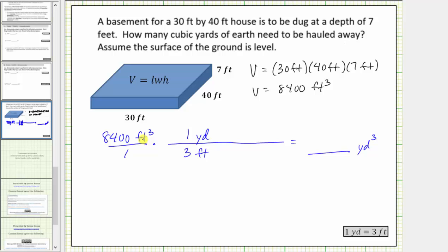But notice how this will not simplify out feet cubed. This will only simplify out one factor of feet. We need two more of these conversion factors to have a total of three conversion factors so that we have feet cubed in the denominator.